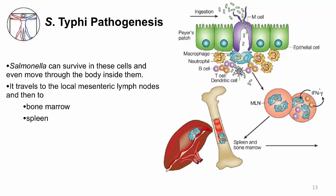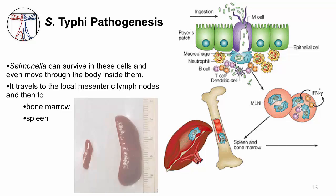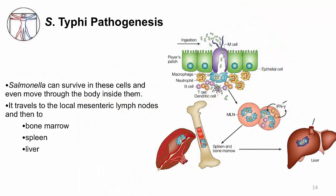This is how Salmonella Typhi travels from the submucosa of the Peyer's patches to other parts of the body — first through the mesenteric lymph nodes, and from there to the bone marrow and spleen. The spleen enlarges in response to the infection, as shown in a photo comparing a normal mouse spleen to one from an infected mouse. The growth of Salmonella at these sites explains why patients can have an enlarged spleen, enlarged lymph nodes, and lab abnormalities related to the bone marrow.